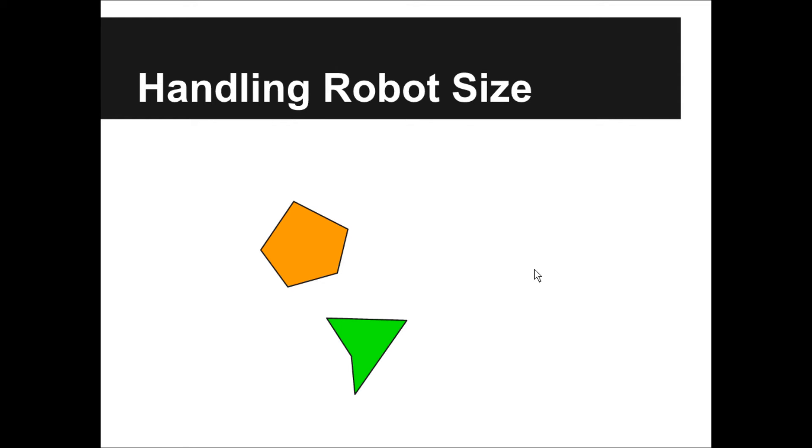Now, I'll talk about how to handle the size of the robot. In the previous discussion, we saw the robot as a point which does not have any size. However, in the real world, the size of the robot matters. In the following scenario, a small robot can go through the red line. However, a bigger one cannot.